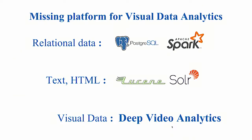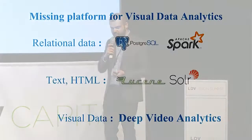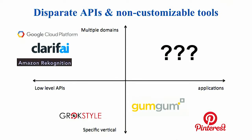When you look at the open source platforms today, you have Postgres and Spark for relational data. For full text and search, you have Lucene, Solr, and Elasticsearch. But there is no such end-to-end platform for visual data. You have libraries like TensorFlow and Caffe, but you don't have a way to maintain state. If you look at the marketplace, you have Google Cloud Platform, Amazon Rekognition, and Clarifai, which provide low-level cloud-based APIs. You have Grok-style GumGum, which provide applications and APIs for a specific vertical. And finally, you have Pinterest, which provides visual search for end-users and customers.